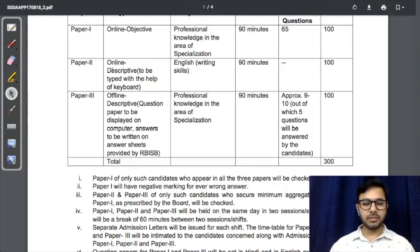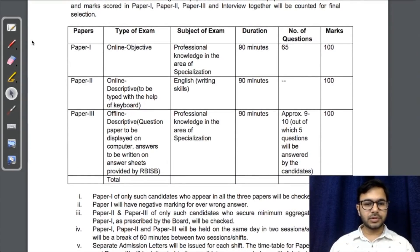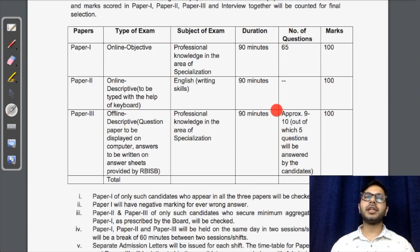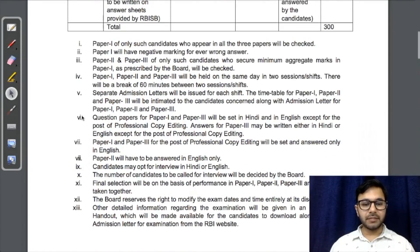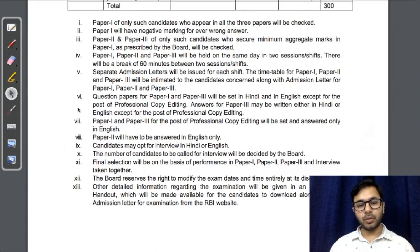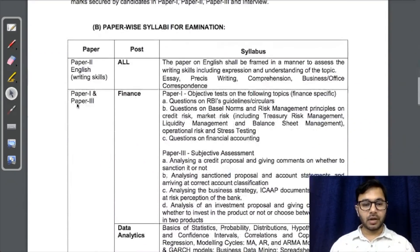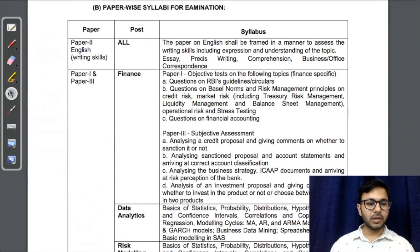Now for the syllabus, which is the most important part. The overall pattern: Paper 1 has 65 questions and 100 marks. Paper 3 will have approximately 9 to 10 questions out of which 5 are to be answered — similar to the older UPSC or pre-2015 RBI method. There will be negative marking. Paper 2 must be written in English only; Papers 1 and 3 can be written in both Hindi and English. Paper 2 for all candidates covers essay, précis, comprehension, and business or office correspondence.